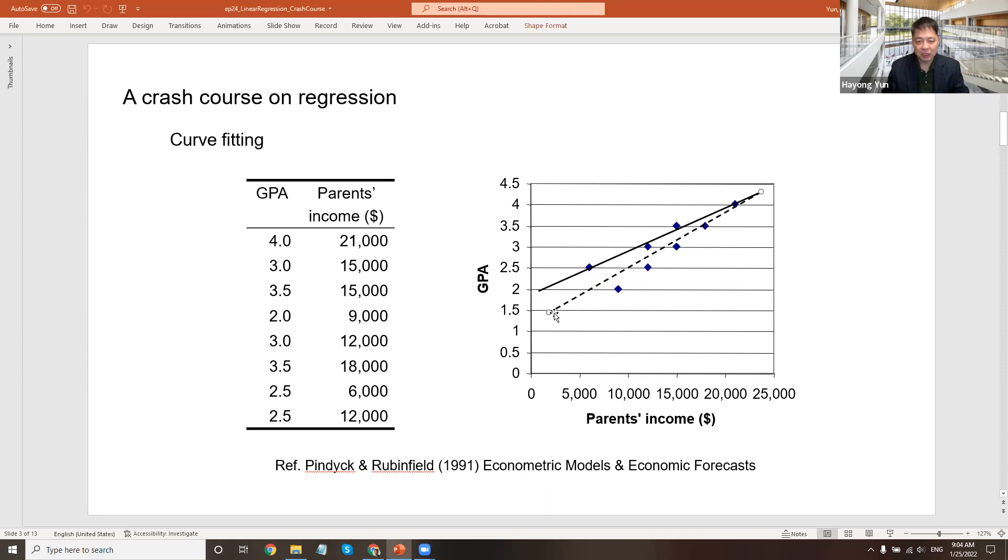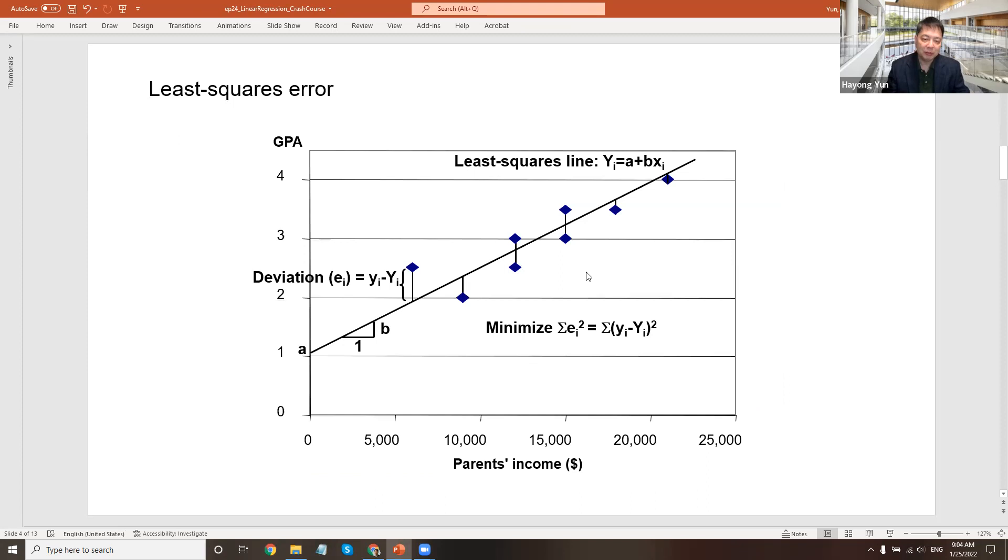Then the question is, how should we draw the line? We can draw it like this, we can do it like this, like this, like this. Which one is the line that we want to pick? Presumably something that goes through all these dots reasonably. But what is reasonable? Long time ago, people figured it out that one reasonable way of doing it is that